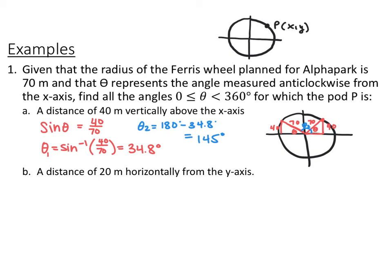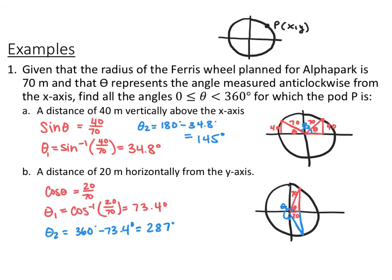So now we want to do the same thing, but now we want the distance to be 20 meters horizontally from the y-axis. So pause the video and try that. So I did the same thing, but since now we have the horizontal distance, that would be our adjacent to theta, so I used cosine. So cosine of theta is 20 over 70, so therefore theta is cosine inverse of 20 over 70, or 73.4 degrees. But again, there's a second place that you're horizontally 20 meters away from the x-axis, and that would be down here at the bottom. So I want to define this second blue angle, theta 2, and again we have congruent triangles here, where inside this blue triangle is the same as inside the red triangle, so the whole circle is 360 degrees, and we don't want 73.4, so therefore our second angle is 287 degrees.